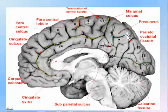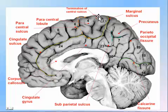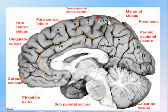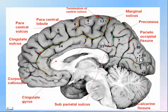On the medial part of the brain we see the cingulate gyrus and cingulate sulcus. The central sulcus reaches anteriorly but continues as the anterior paracentral and marginal or posterior paracentral. Then we have the parieto-occipital fissure separating the occipital lobe from the parietal lobe.